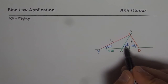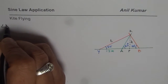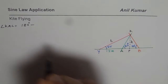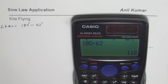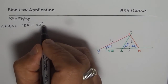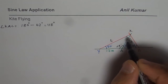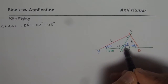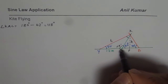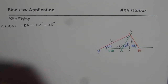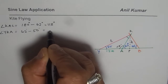Since we know the angle at A is 62 degrees, we can find angle KAL: angle KAL equals 180 degrees minus 62 degrees, which is 118 degrees. You can also find the angle at K using the exterior angle theorem — angle YKA equals 62 degrees minus 50 degrees, which is 12 degrees. You could also use 180 minus the sum of the other two angles and get the same answer.